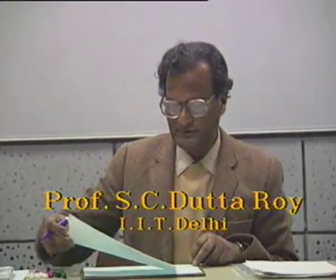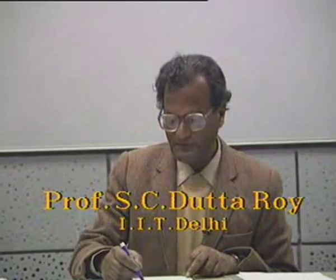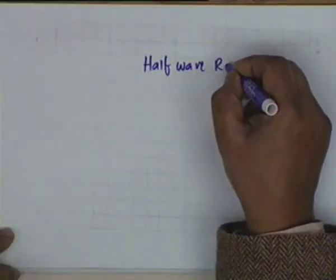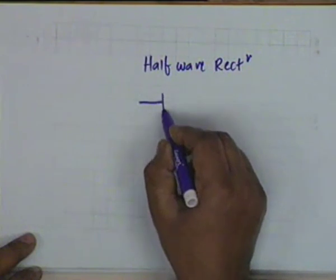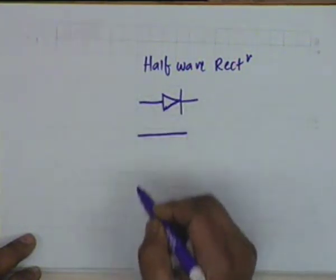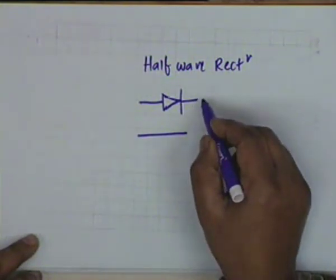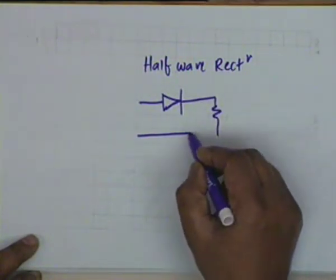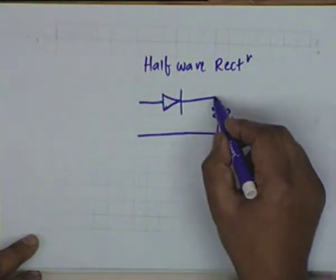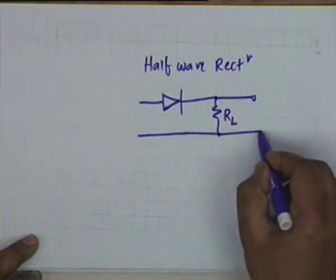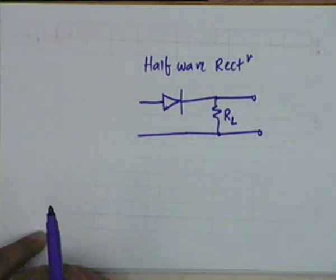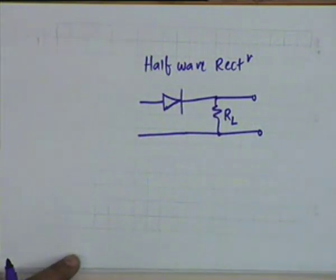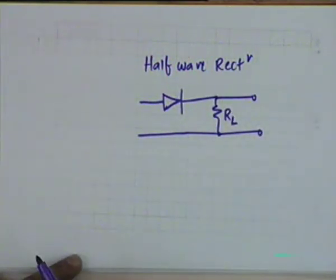The simplest rectifier circuit is the so-called half-wave rectifier, which uses only one diode. The AC is applied between the two input points and is then connected to a load RL. The output voltage is taken from here and there is an AC source. You could connect to the AC mains, which will give you 230 volts, and therefore the voltage you can get across RL shall be fixed — it will be the rectified 230 volts and its average value.